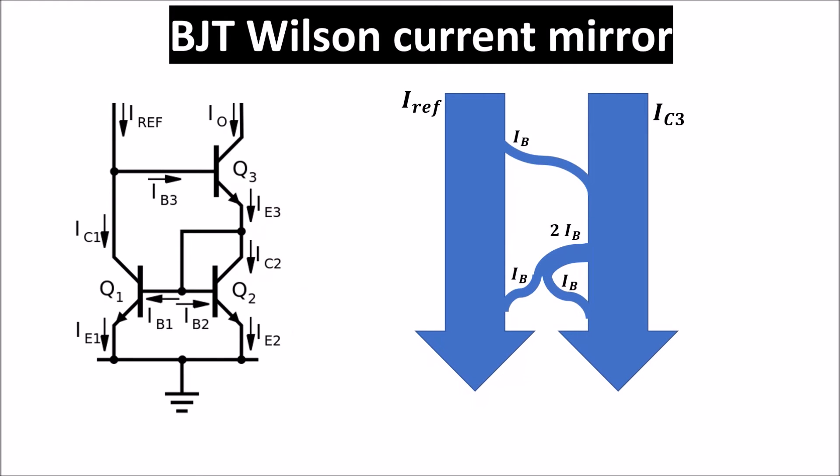The Wilson configuration is more balanced. You see that from the first branch departs 1IB and later we give it back. So the base current balance is 0 in the first and the second branch. Some currents depart, but the same currents come back.